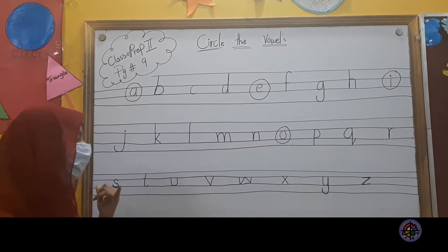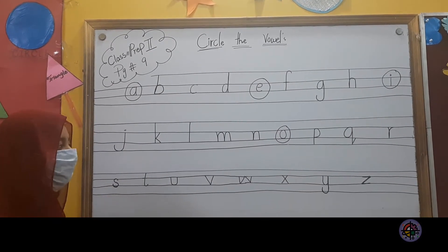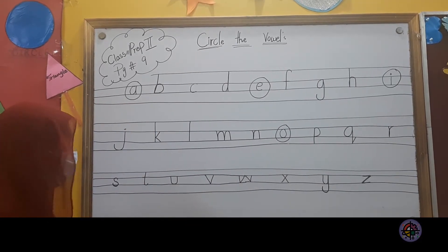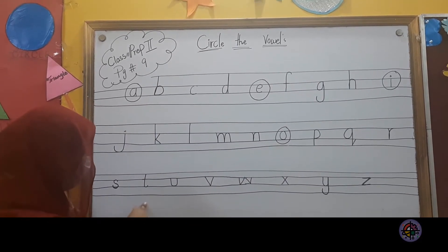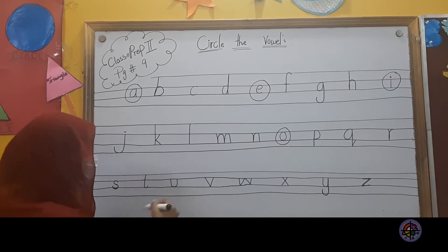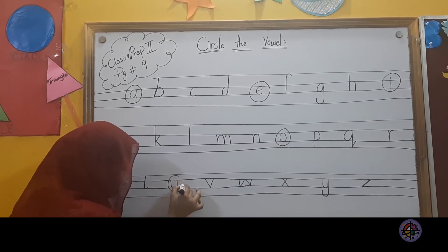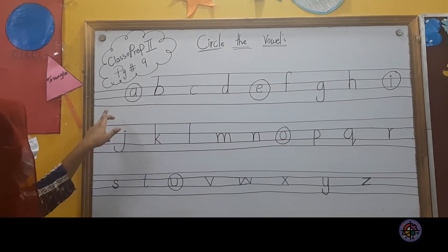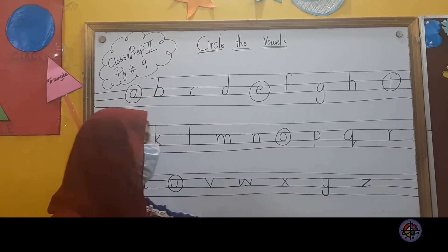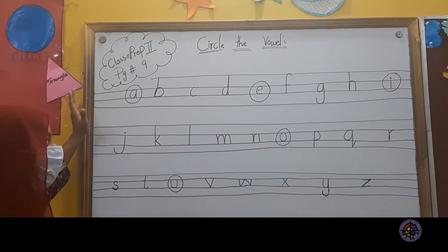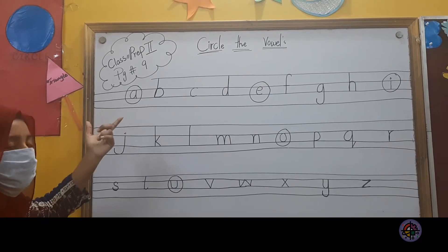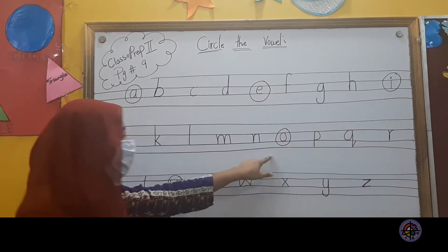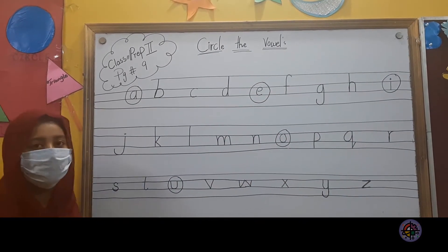So we are now going to circle here in the fourth column. We will circle here. S, T, U — here we are circling. This is our circle of vowels. We are circling vowels: A, E, I, O, U.